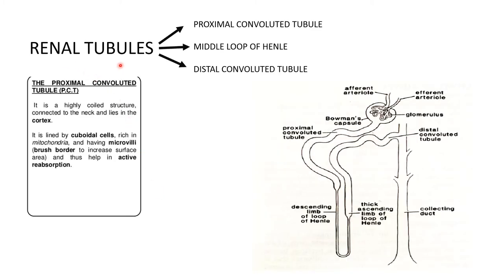The renal tubule is formed of three parts: the proximal convoluted tubule, the middle loop of Henle, and the distal convoluted tubule. The proximal convoluted tubule is a highly coiled structure connected to the neck, lying in the cortex. It is lined by cuboidal cells rich in mitochondria and having microvilli — a brush border — to increase surface area, which helps in active reabsorption.